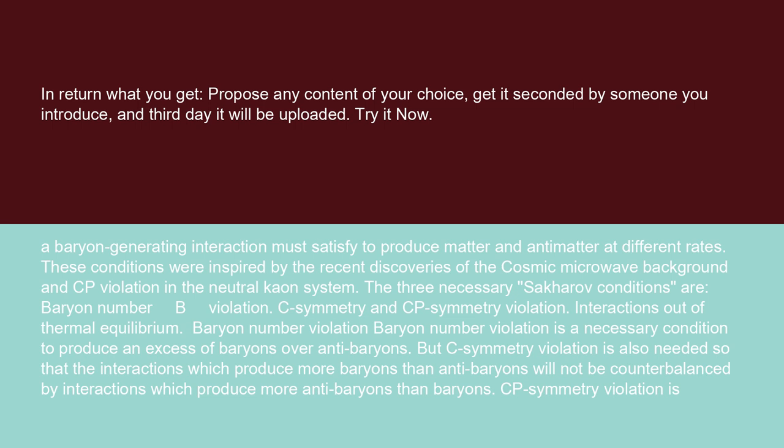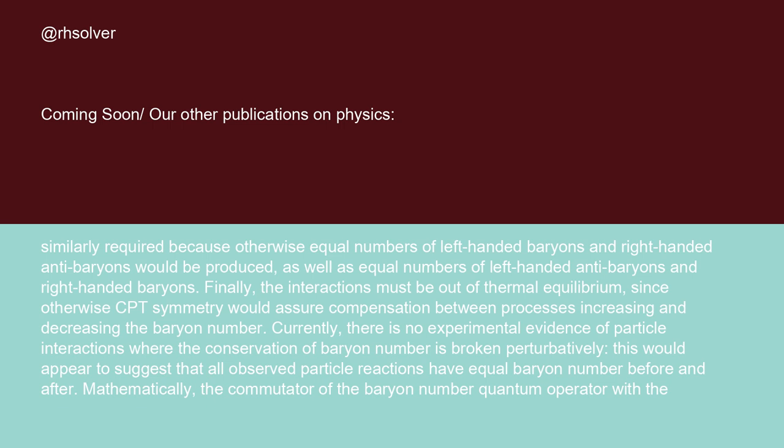CP-symmetry violation is similarly required, because otherwise equal numbers of left-handed baryons and right-handed antibaryons would be produced, as well as equal numbers of left-handed antibaryons and right-handed baryons. Finally, the interactions must be out of thermal equilibrium, since otherwise CP-symmetry would ensure compensation between processes increasing and decreasing the baryon number.